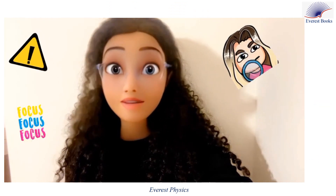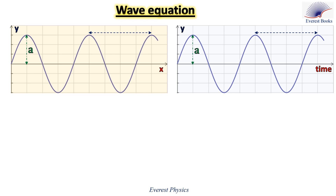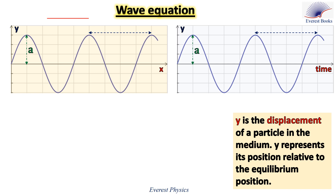Focus please — this is important! Now let's derive the wave equation. Consider this figure: it is a snapshot of a transverse wave. Y is the displacement of a particle in the medium, representing its position relative to the equilibrium position. The equilibrium position is represented by the x-axis. For example, the displacement of one particle is positive while the displacement of another is negative because it is below the x-axis. In a transverse wave, the distance separating two consecutive crests is the wavelength lambda.